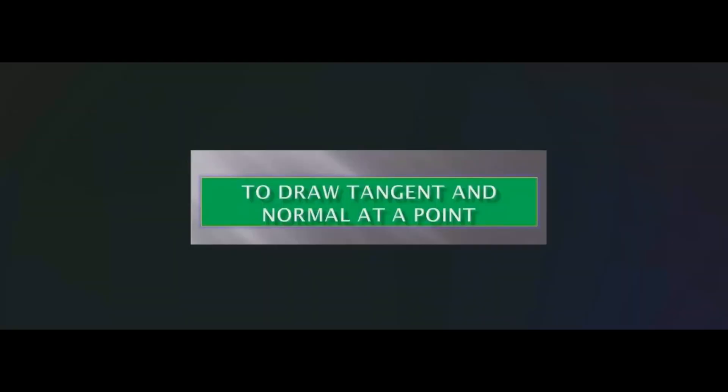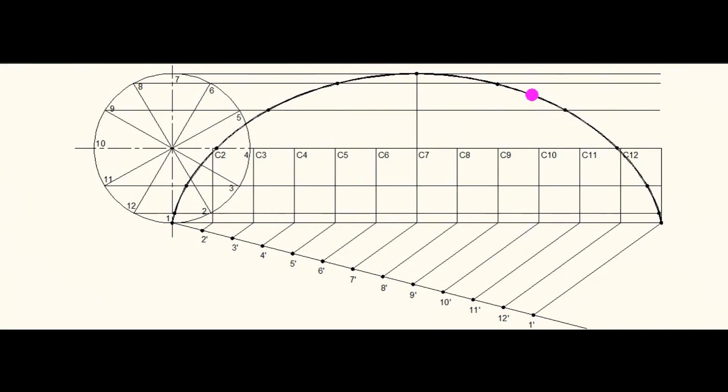To draw tangent and normal, mark a point on the curve. This point as center and with the radius of the generating circle, cut an arc on the center line.